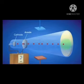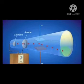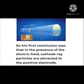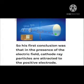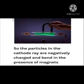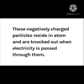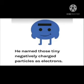He applied an electric field and found that the cathode rays were deflected towards the positively charged plate. This showed that cathode rays contain negatively charged particles, which are attracted to the positive electrode. These negatively charged particles also bend in the presence of a magnet. These negatively charged particles reside in atoms and are knocked out when electricity is passed through them. He named these tiny negatively charged particles as electrons.